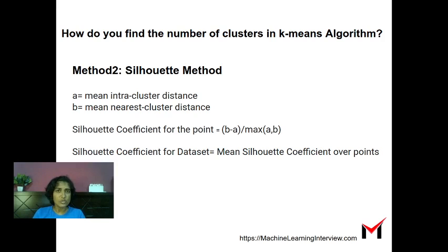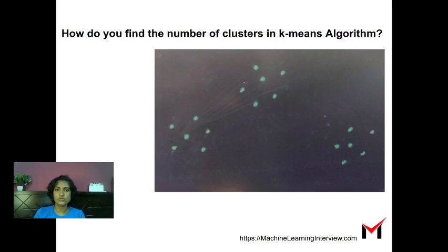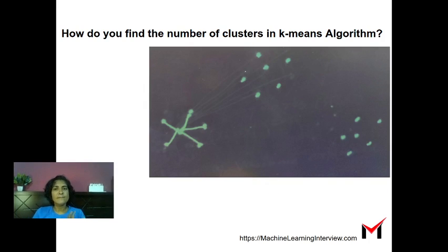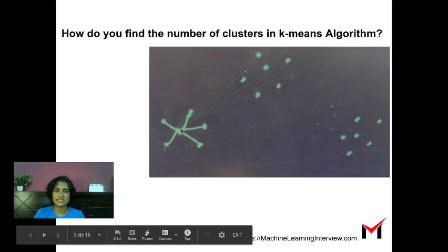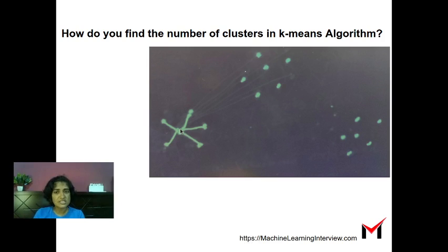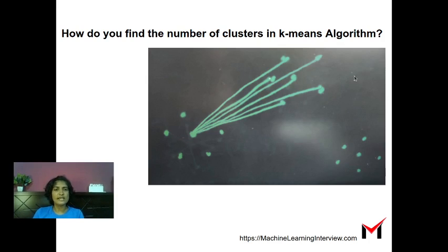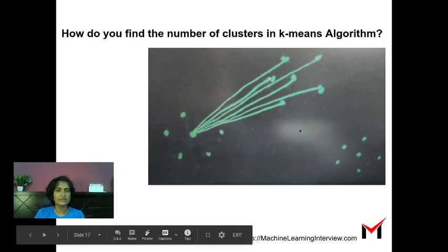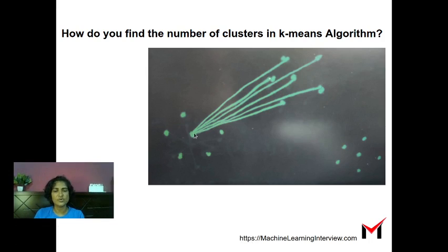Another popular method is the silhouette method. For every point you compute a silhouette score using two quantities: the mean intra-cluster distance, called a, and the mean nearest-cluster distance, called b. The mean intra-cluster distance is the mean distance from a particular point to every other point in its own cluster. The mean nearest-cluster distance is the average distance from that point to every point in the nearest cluster other than its own.